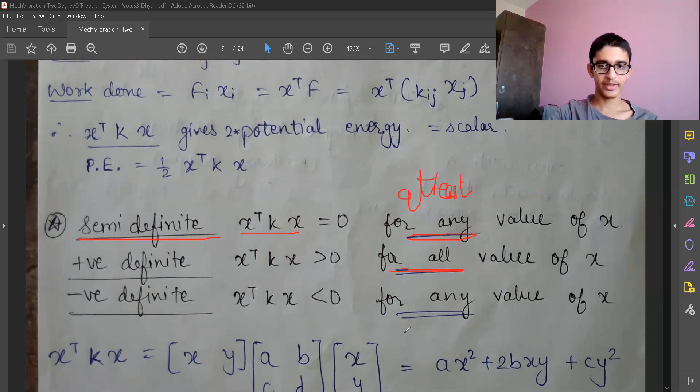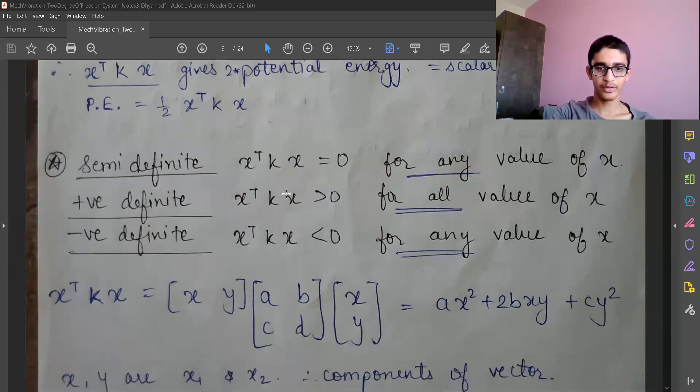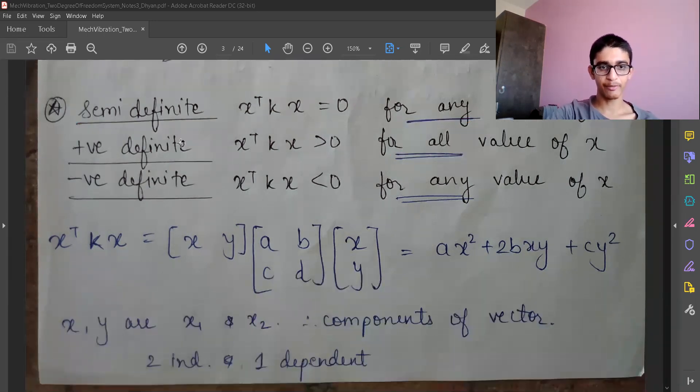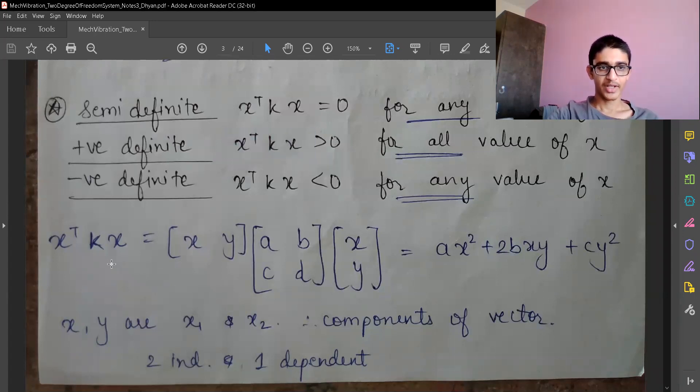Now let's go to the more mathematical side, which will help us relate to the physical understanding. Let's take X as [X, Y], K as [A, B; C, D]. We have two independent variables X and Y, and one dependent value - the whole value of X transpose KX.